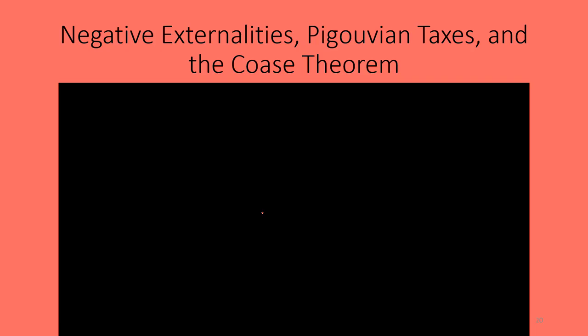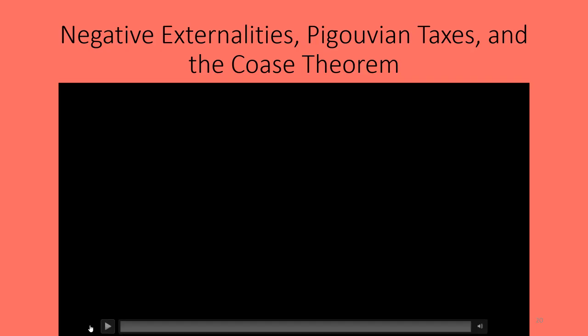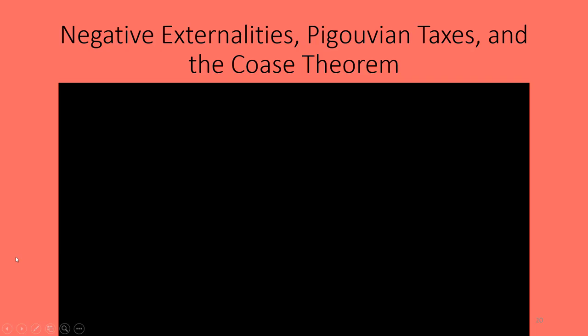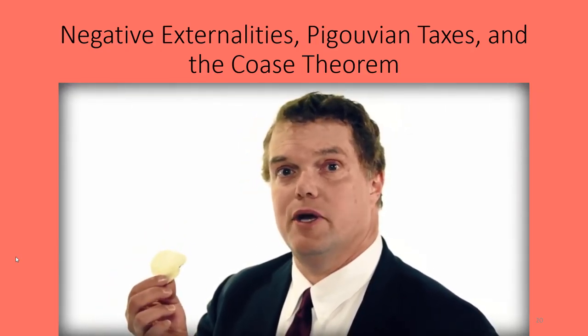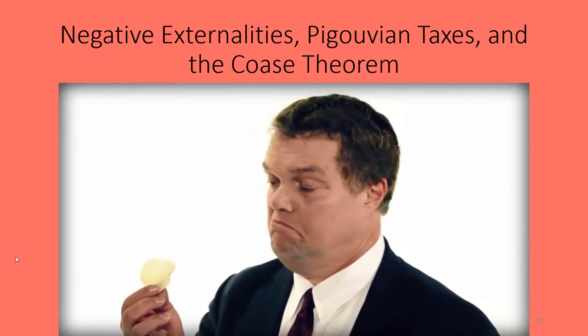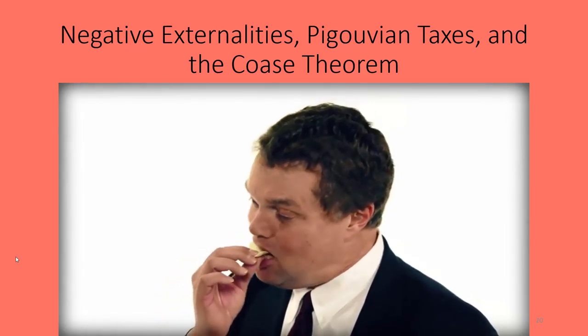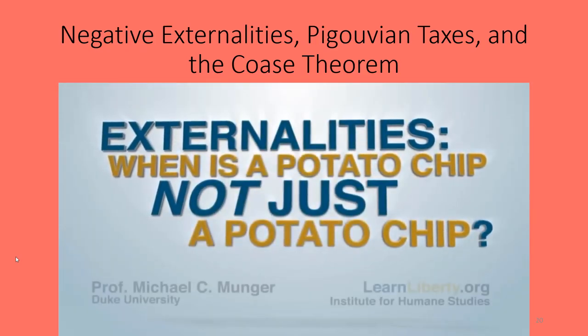I have a short video clip here regarding negative externalities, Pigouvian taxes, and the Coase Theorem. This is a video clip from Mike Munger, who teaches political science at Duke University. It's a very entertaining way of showing how these things relate together.